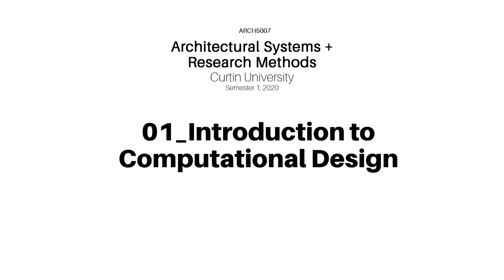Before we go any further, I just want to talk about some of the terminology. You can see on the screen I have 'computational design,' but you'll find these terms are quite interchangeable. You might have heard of computational design, parametric design, algorithmic design, generative design, scripting, or coding. They all more or less mean the same thing, especially within the context of Grasshopper or Dynamo, though some might have slight variances. For example, generative design might mean something slightly different — generating hundreds or thousands of outputs through an evolutionary solver.